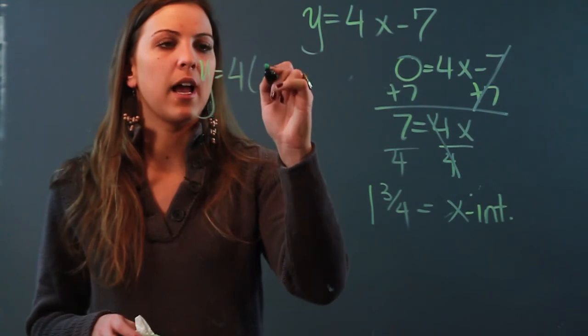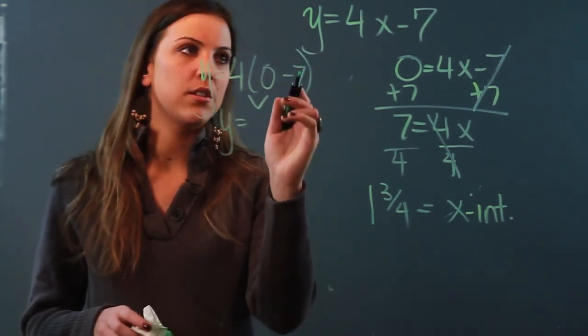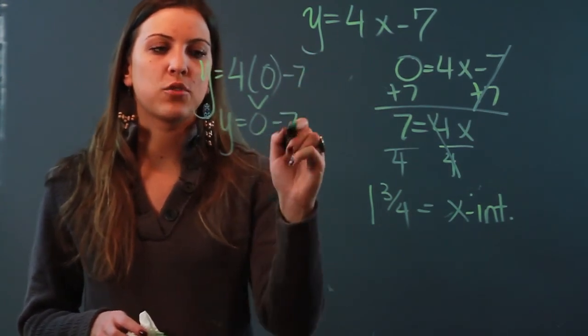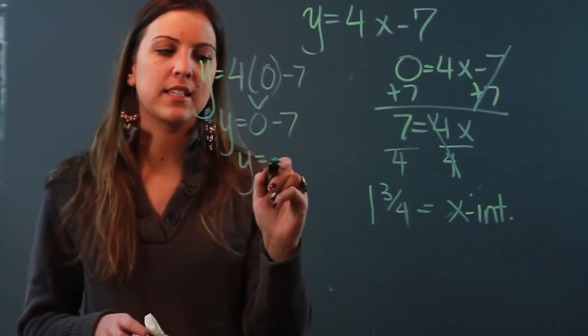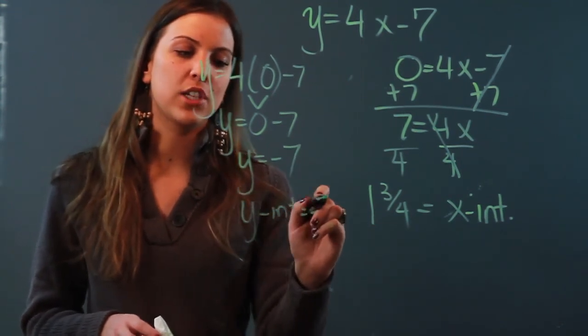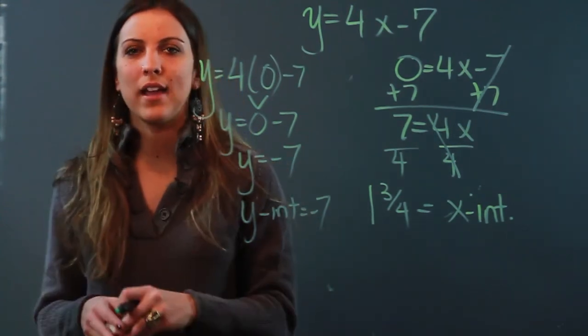So I'm going to write y equals four times zero minus seven. Y equals four times zero is zero, subtract seven from that, and I get y is negative seven. So my y-intercept for that equation is negative seven. All right, so that is how you find your x and y-intercepts.